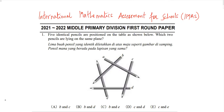Question 1: Five identical pencils are positioned on a table as shown below. Which two pencils are lying on the same plane? Same plane means on the same surface. Let's check the options. Starting with C and E — C is going from level zero up to level one or two, since it's on D, but E is on level zero, so they are not on the same plane. Similarly, C and D are on different levels.